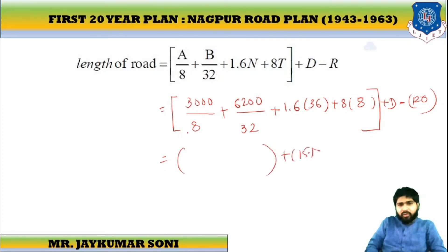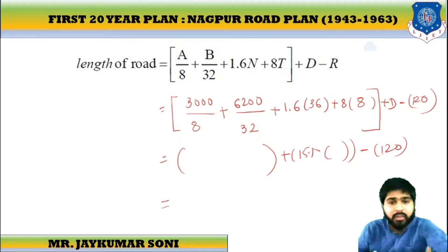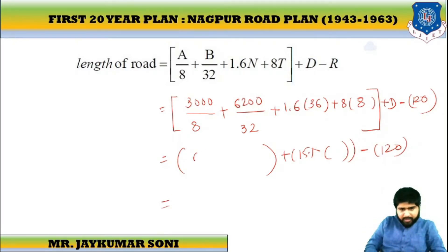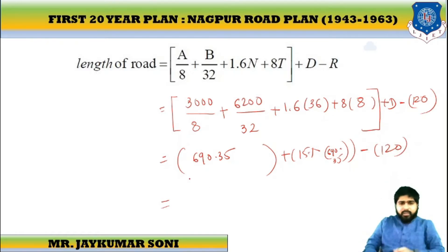D will be 15% of this whole value. After calculating, the sum comes to 6,001.25, and 15% of that gives D. The total value obtained is 753.99 km. This is the total length of metal road.